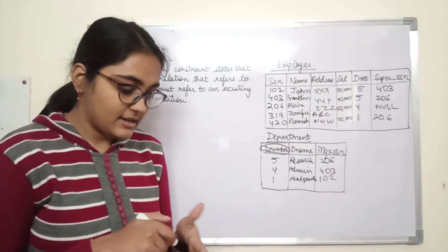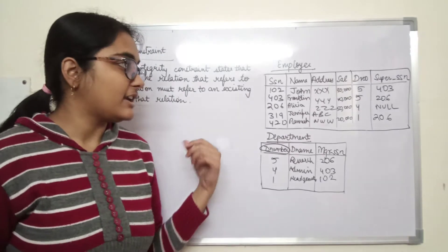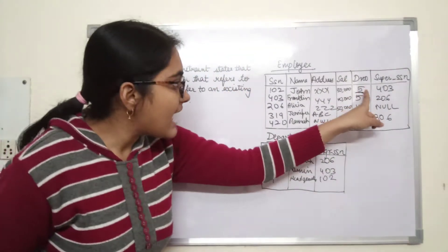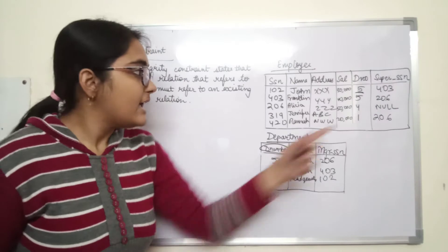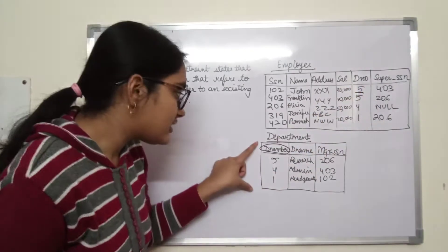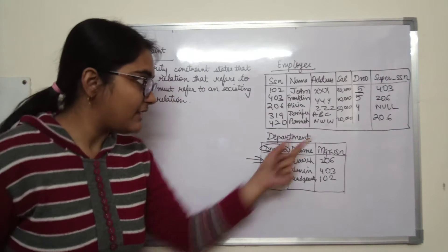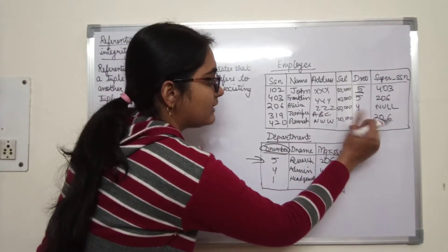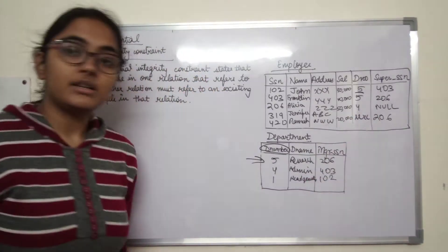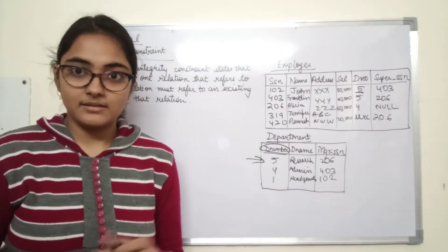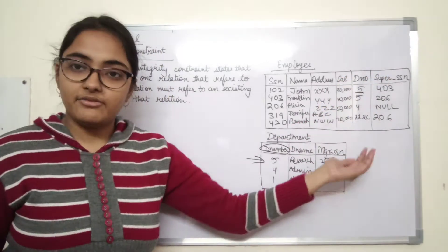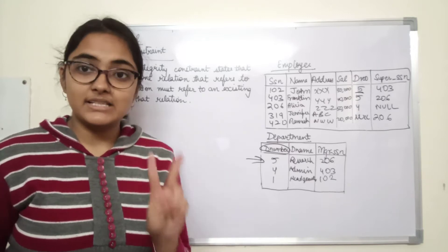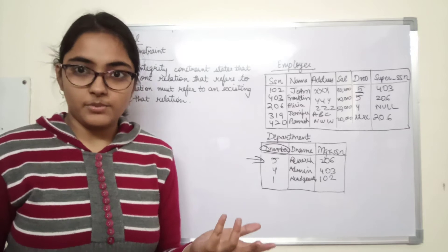The second condition states the referential integrity constraint: either this particular value must occur as the value of some tuple in the referenced relation, or it can be null. A set of attributes that satisfies these two conditions is said to be the foreign key for a particular relation.